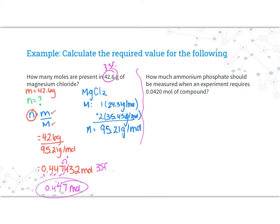Next question. How much ammonium phosphate should be measured when an experiment requires 0.0420 moles of this compound? Let's write out what we know. In this case, we were given moles - 0.0420 moles. We are looking for mass in terms of how much. When we're measuring things in the lab, we're really only able to measure a mass or a volume. And last but not least, we're probably going to need the molar mass of this compound. Let's write its formula. Ammonium phosphate is (NH4)3PO4. We need to calculate this molar mass.